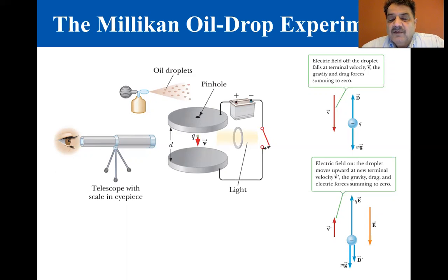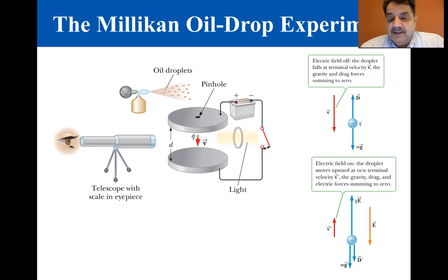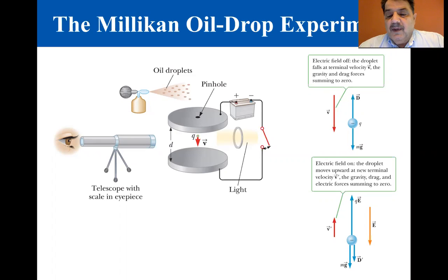If no electric field is present between the plates, the two forces acting on the drop are the force of gravity mg acting downward and an upward viscous drag force D, as shown in the top right figure. The drag force is proportional to the speed of the drop. When the drop reaches its terminal speed V, the two forces balance: mg equals D.